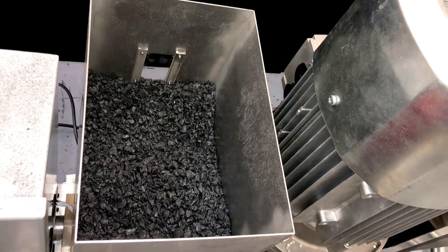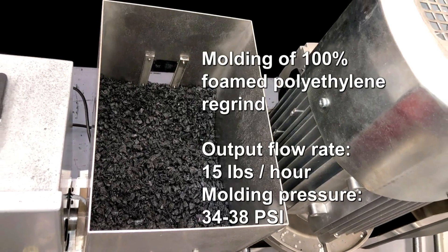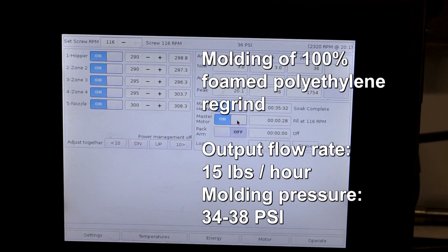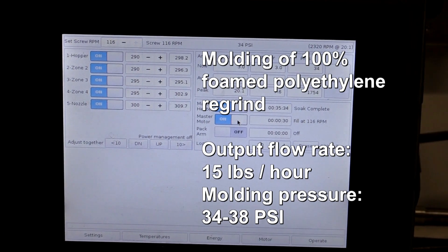And with that, we can convert about 10 to 15 pounds of waste plastic per hour into finished goods.